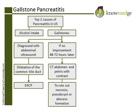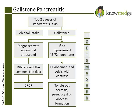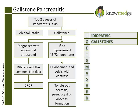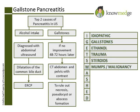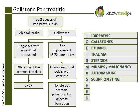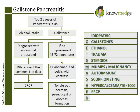Again, alcohol and gallstones are the top two causes of pancreatitis. The well-known mnemonic, 'I GET SMASHED,' can help you remember the major causes of pancreatitis. The I stands for idiopathic, G for gallstones, E for ethanol, T for trauma, S for steroids, M for mumps or malignancies such as pancreatic cancer, A for autoimmune pancreatitis, S for scorpion sting, H for hypercalcemia or hypertriglyceridemia, E for ERCP, and D for drugs such as thiazide diuretics.